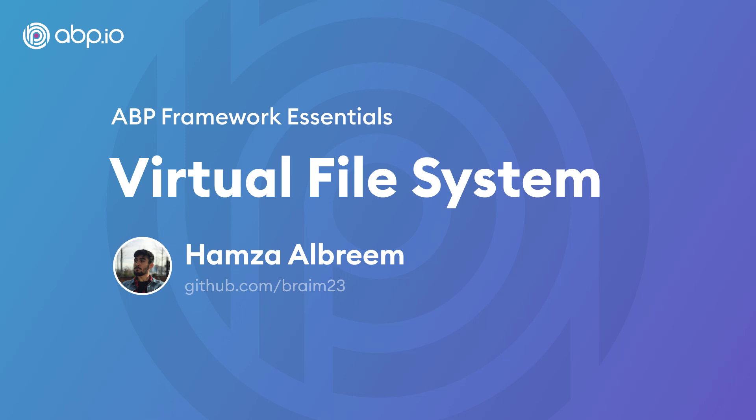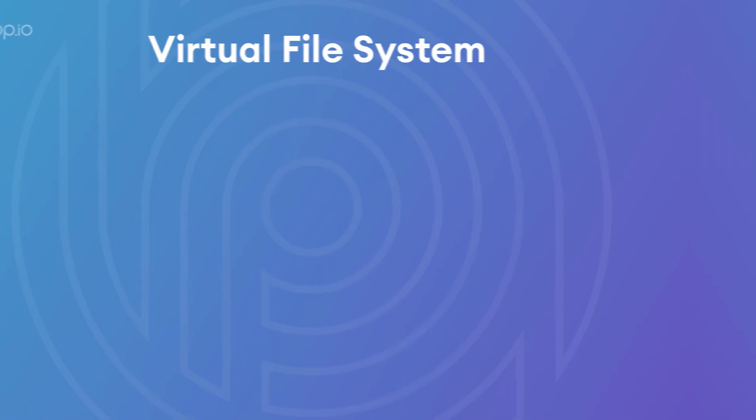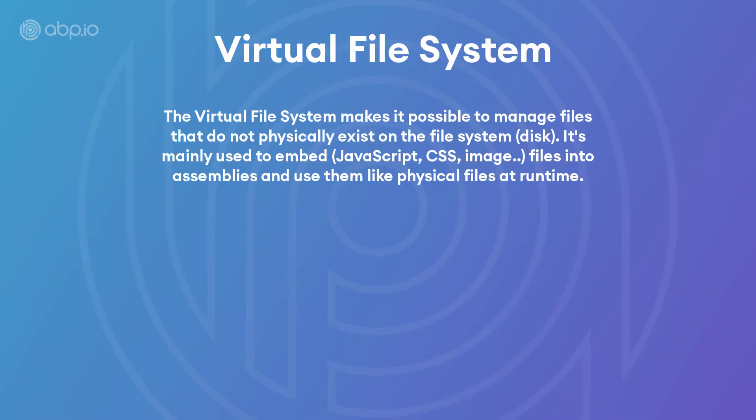Hey there! In this video, we'll talk about the virtual file system from the ABP framework. The virtual file system makes it possible to manage files that do not physically exist on the disk. It is mainly used to embed JavaScript, CSS, and image files and use them like physical files at runtime.